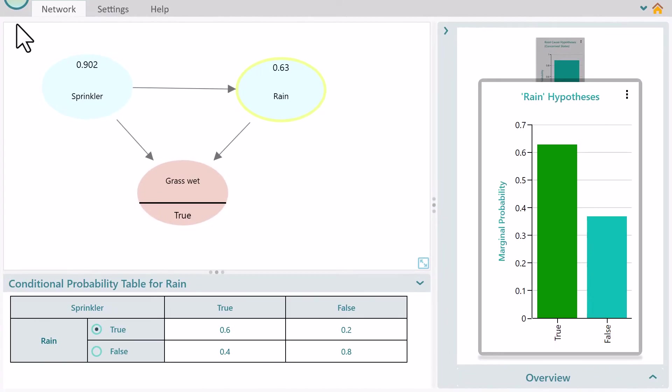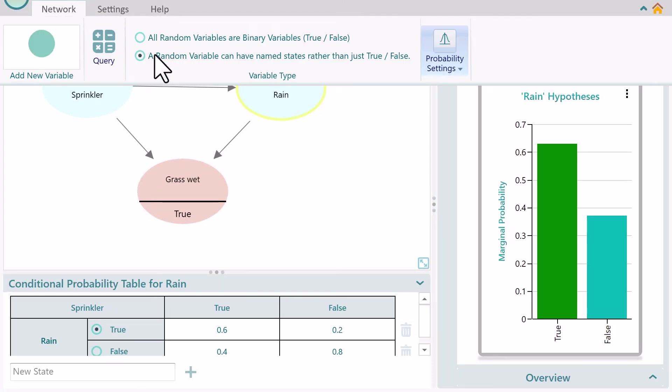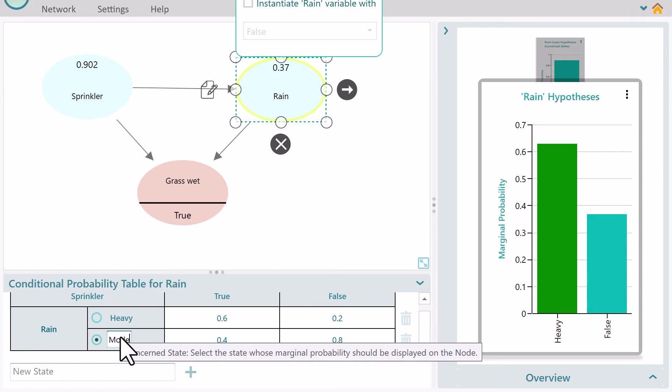Not only just true-false binary state random variables, rather your variable can have more than two states.